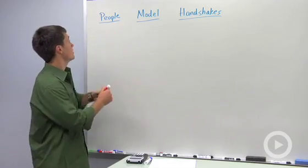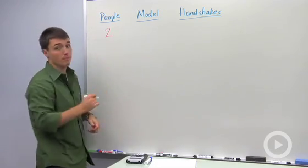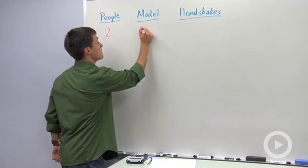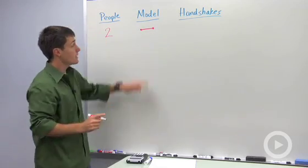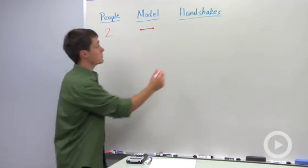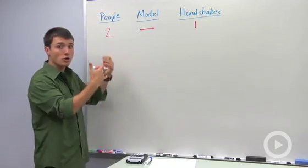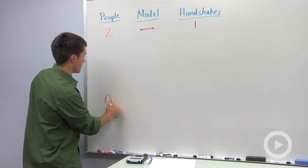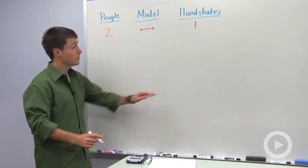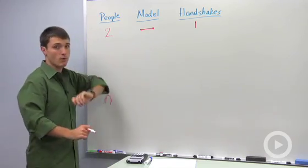So let's say you had two people. The mathematical model of that would just be a line segment, and you would say that the number of handshakes possible here is one. So our goal is eventually to figure out for n number of people how many handshakes. Let's look at a couple more examples.